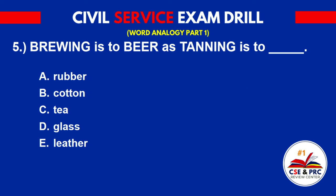Number 5: 'Brewing' is to 'beer' as 'tanning' is to blank. A. Rubber. B. Cotton. C. Tea. D. Glass. E. Leather. The answer is E. Leather.